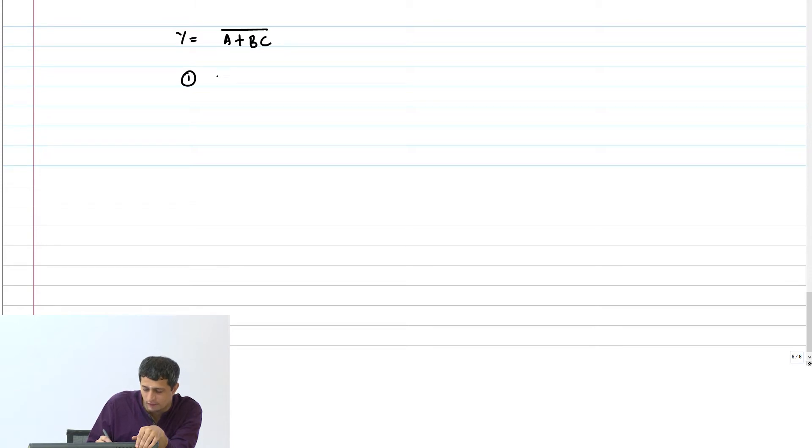First step: invert function. Invert y implies y bar is A plus BC to implement pull-down network.